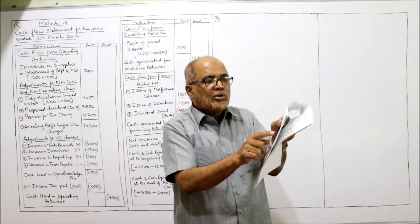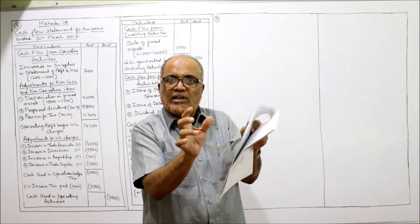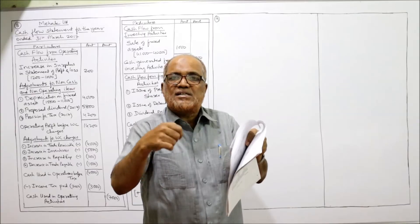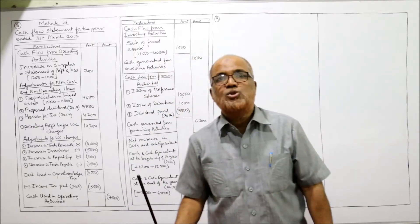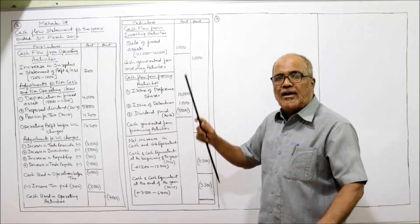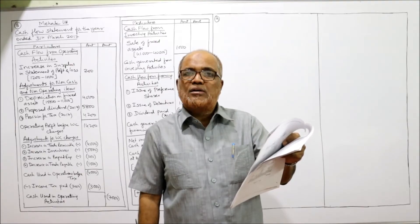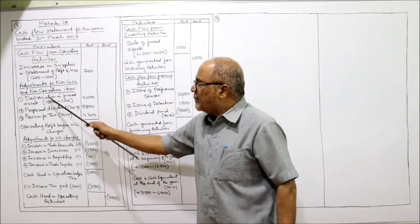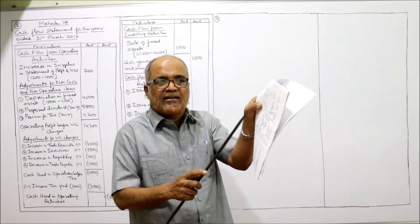So original cost: last year was 41,000, current year is 40,000. That means during the current year some fixed assets were sold, because 41,000 minus 40,000 equals 1,000. So investing activity: sale of fixed assets 1,000. Depreciation: last year 11,000, current year 15,000 — depreciation provided during the year is 15,000 minus 11,000 equals 4,000. Depreciation on fixed assets: 4,000.